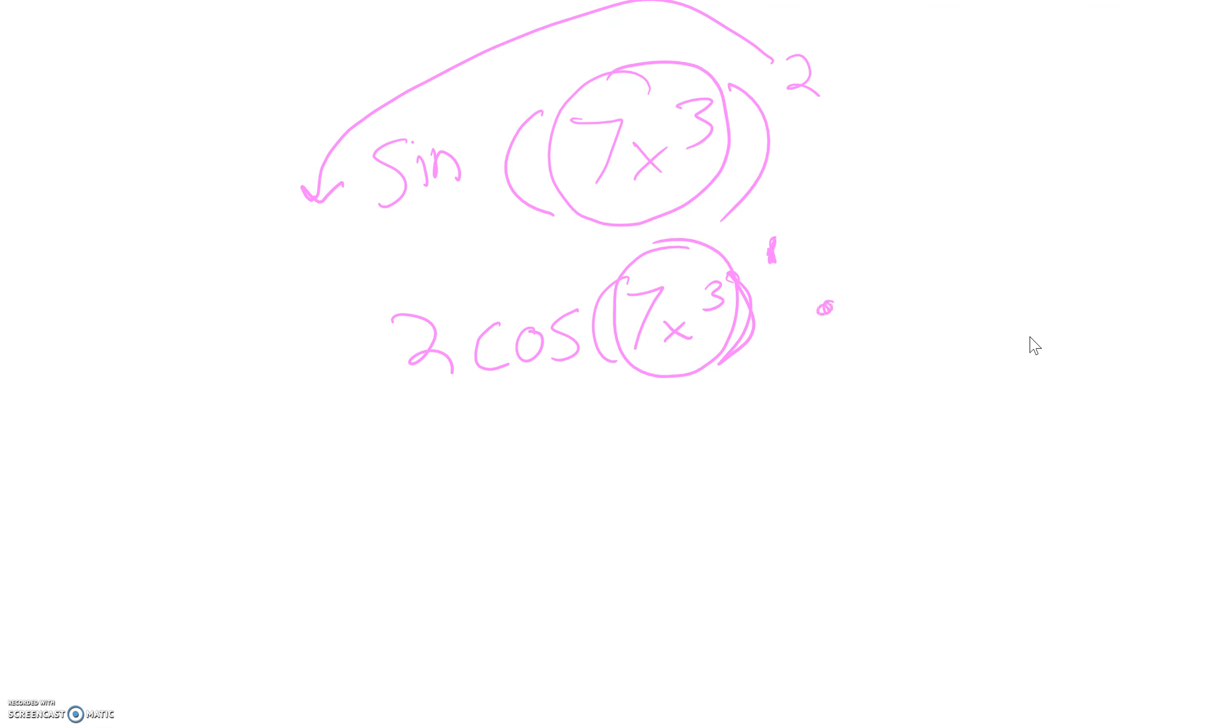So, the derivative of 7x cubed. Pause. Think about it. Sorry about that phone call. So, pause. Think about that. Hopefully, you've got it at this point. You pull down the 3. Multiply that out. You get 21x. Subtract 1 from 3. And you get 2.